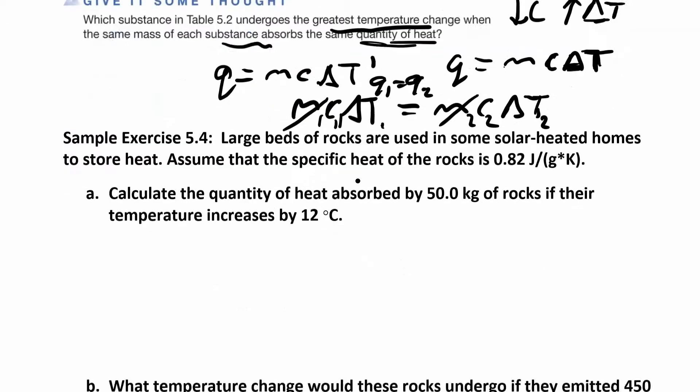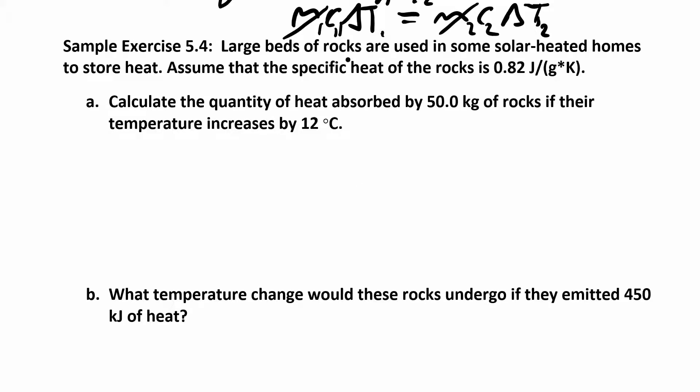Let's apply it to this word problem. Large beds of rocks are used in some solar heated homes to store heat. Assume the specific heat of the rocks is 0.82 joules per gram K. They want us to calculate the quantity of heat. Quantity of heat is q. A lot of people confuse specific heat and heat. Heat is just q, the units are going to be joules or kilojoules. Specific heat is going to be joules per gram K or joules per gram degree C. So q is the one that only has one unit, c has all the different units. Calculate q absorbed when you have 50 kilograms, that's our mass, if their temperature increases by 12. That's your ΔT.